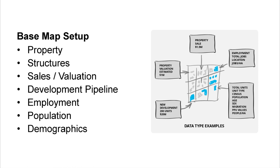Before getting into the data science, we set up the base map. The data type examples include: property sale data, employment data (number of businesses and jobs), total units, type of unit, population within a geography, new development that has taken place (e.g., a 200-unit development), and property valuation estimates. All of this is helpful in setting up the base map.